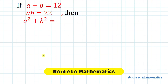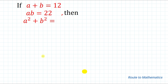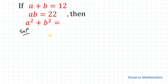Hello everyone, welcome to my channel Root to Mathematics. In this video we are going to solve a system of equations. The given question is: if a plus b equals 12 and ab equals 22, then find the value of a squared plus b squared. Without any delay, let's start solving.